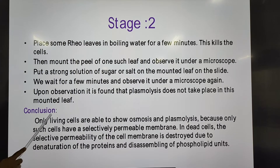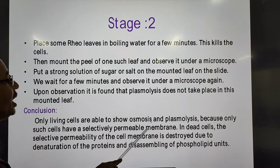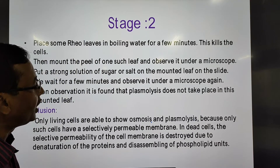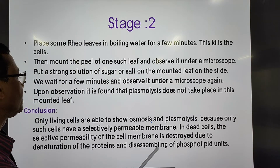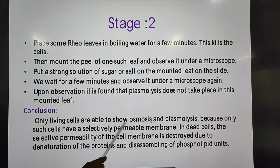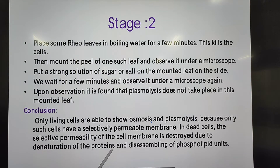The conclusion is that only living cells are able to show osmosis as well as plasmolysis, because only such cells have a selectively permeable membrane. As soon as you boil the leaf, the leaf becomes dead and the semi-permeable nature of the plasma membrane is destroyed in dead cells.